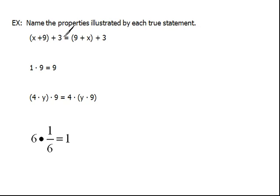Here we have x plus 9 plus 3 equals 9 plus x plus 3. Now, it might be very, very tempting to say this is the associative property just because it has 3 items. But look at it very carefully.